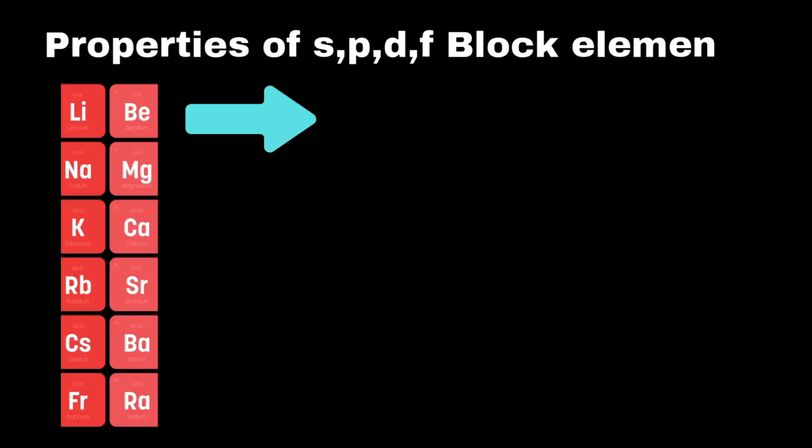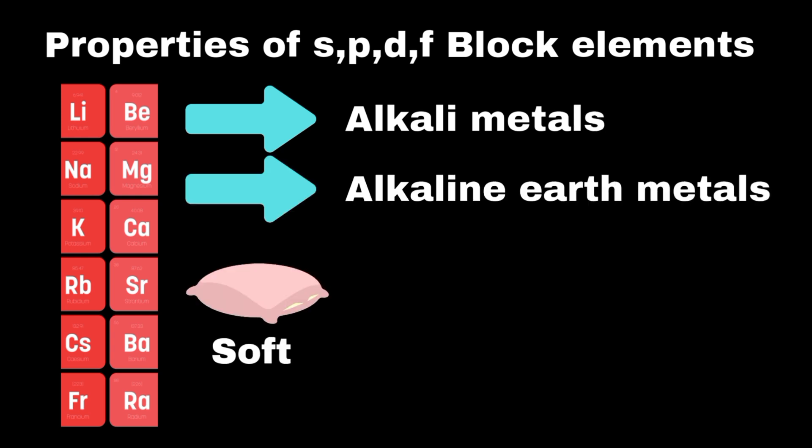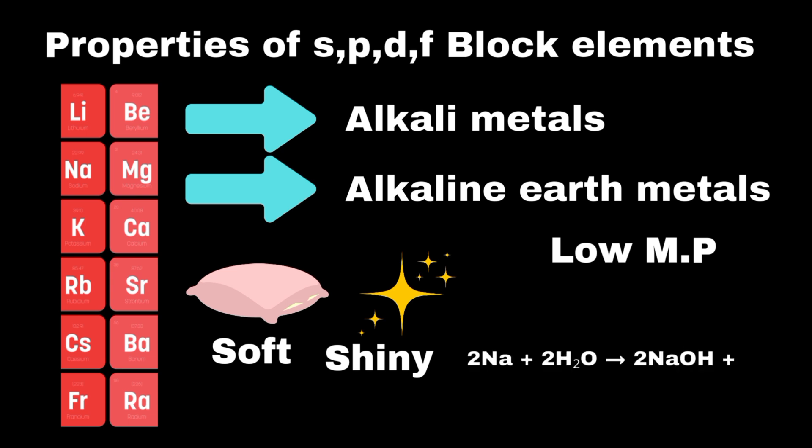Properties of S, P, D, and F block elements. The S block includes alkali metals and alkaline earth metals. Alkali metals like sodium and potassium are soft, shiny, and have low melting points. They react vigorously with water to produce hydrogen gas and a metal hydroxide.